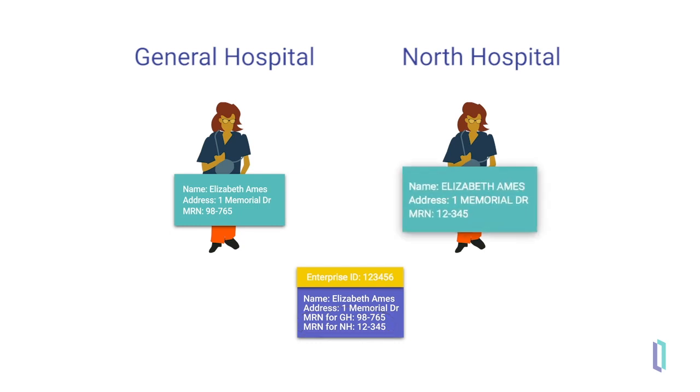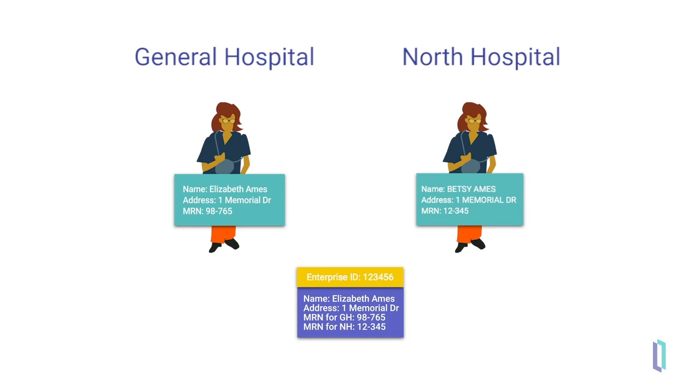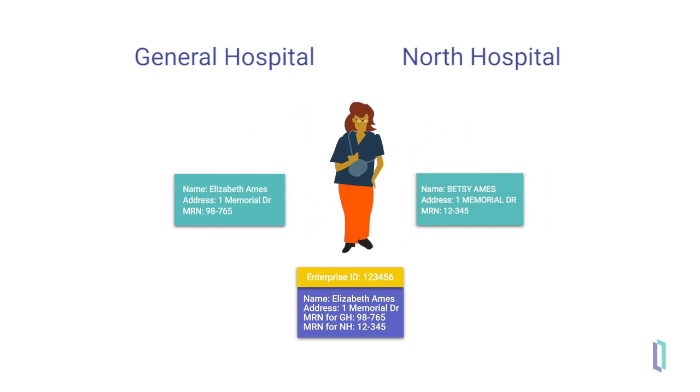Sometimes, the demographic data in two medical records may differ slightly, and it is the task of the MPI to compare the demographics and decide if the medical records are for one individual or if, for example, Betsy and Elizabeth might be twins.